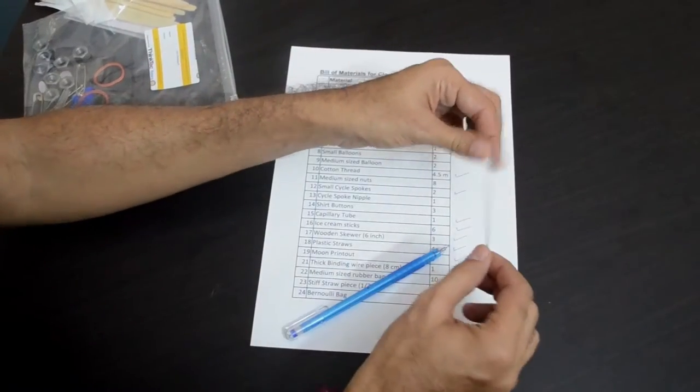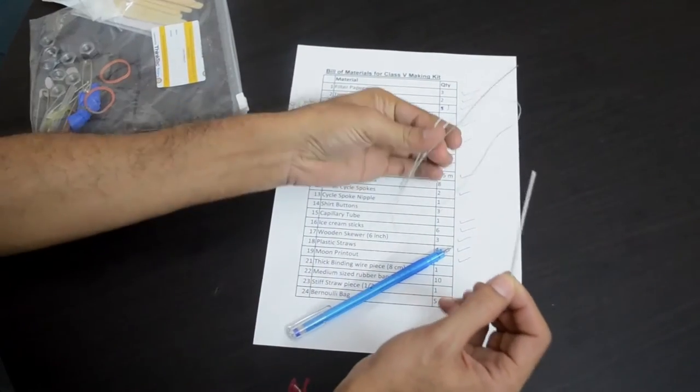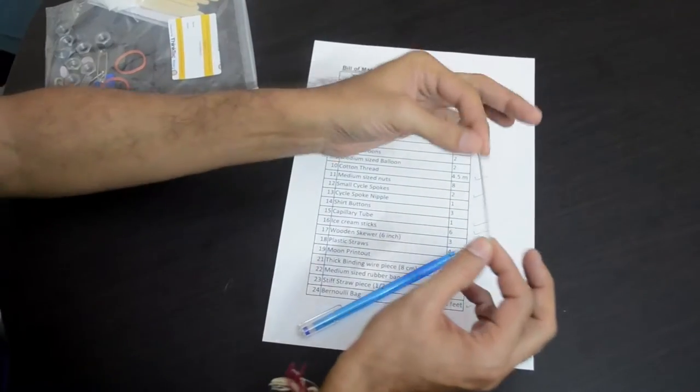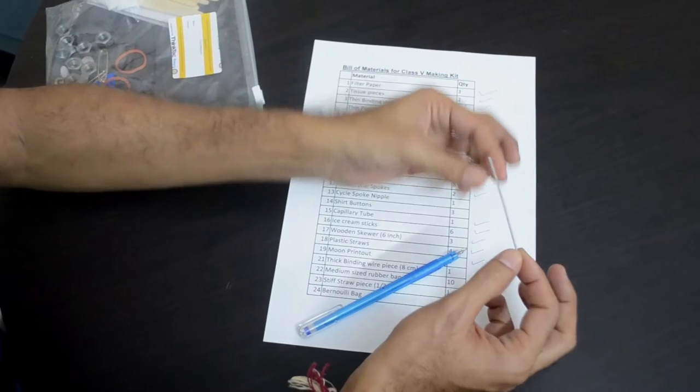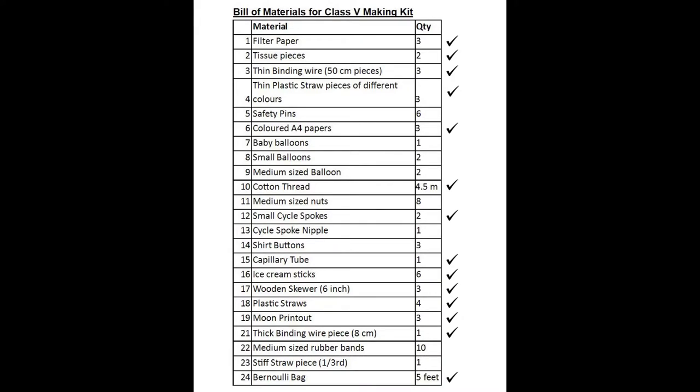Then you will find a thick binding wire. We looked at a thin binding wire earlier which is easier to bend. There is another much thicker binding wire which you will need for the tidal turbine, which is around 8 cm in length. That is item number 21 in our bill of materials. You will find 1 piece like this.